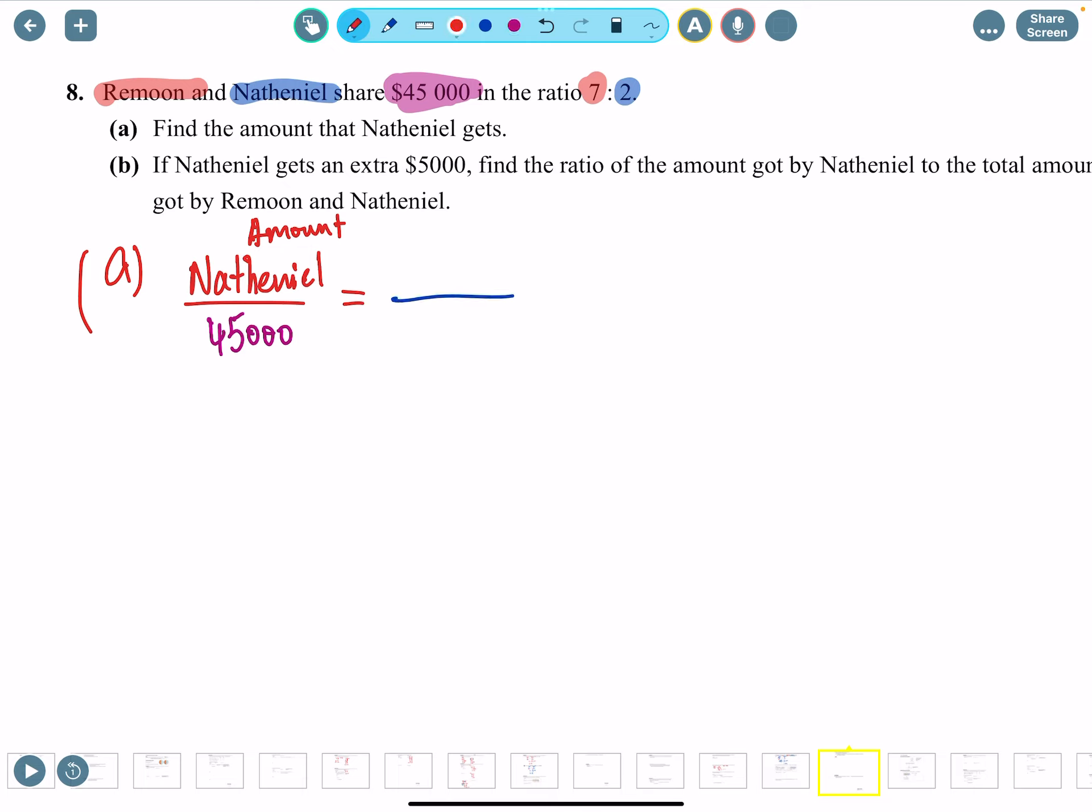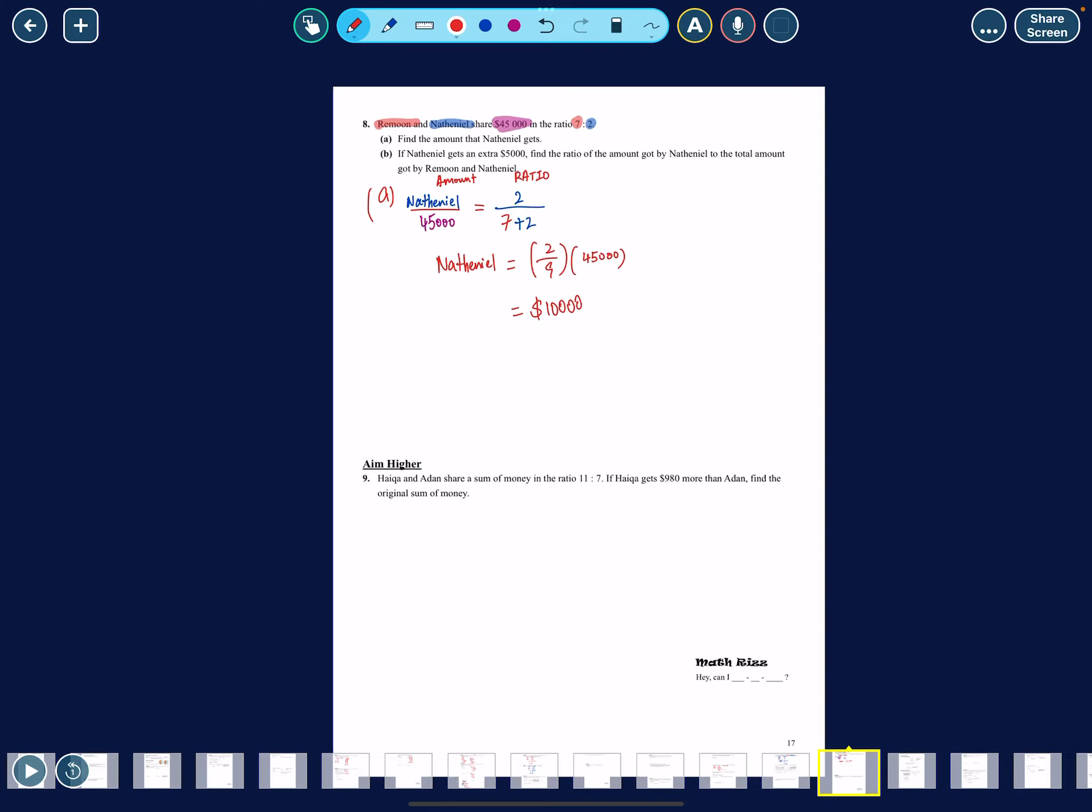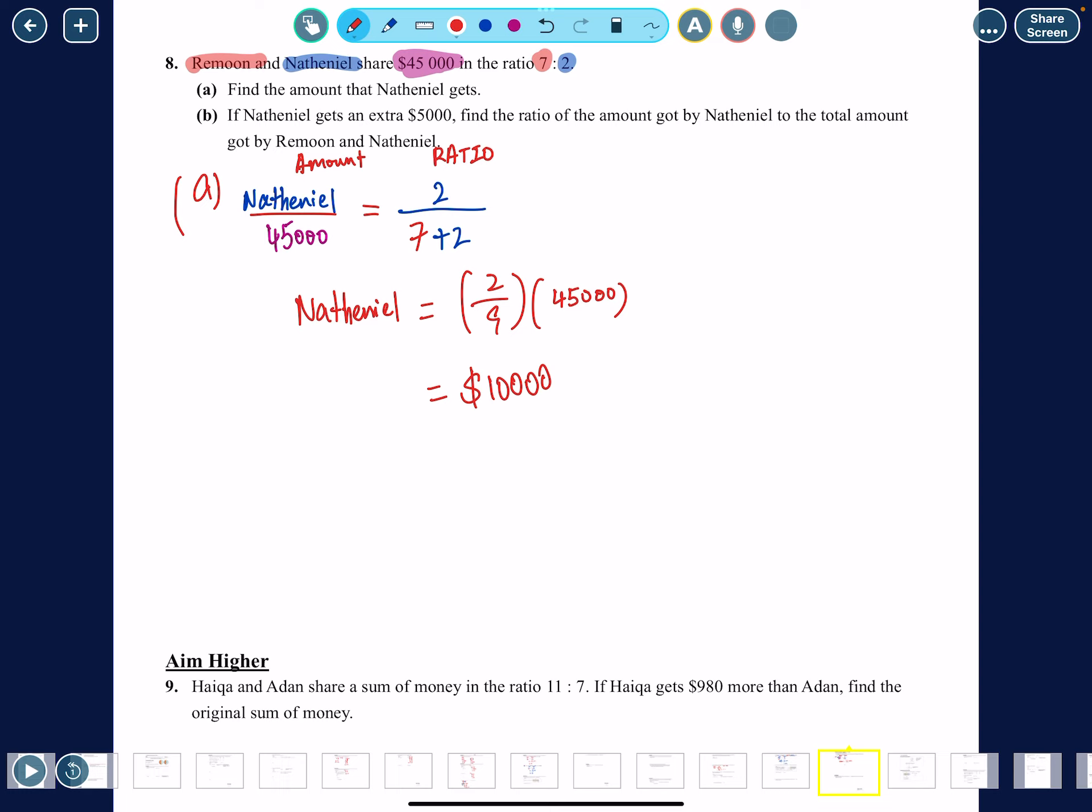Nathaniel amount divided by $45,000 - that's the total. The ratio for Nathaniel is 2 in blue, and for the total you've got to add them: 7 plus 2. So finally, Nathaniel is going to get 2 out of 9 times $45,000. Let's calculate: 2 divided by 9 times $45,000 is $10,000. Hope that's enough for you, Nathaniel.